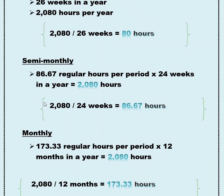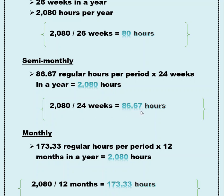Onto a semi-monthly payroll schedule. This one can be a little tricky and will vary for each employer. It will have very set schedules that you'll want to make sure you follow to ensure you understand how the pay is calculated. Definitely read your employer's handbook and make sure you understand how this cycle works. There are 86.67 regular hours per period, and you multiply that by 24 pay periods in the year to get your 2,080 hours. You divide your 2,080 by 24 periods, and that gives you 86.67 hours.